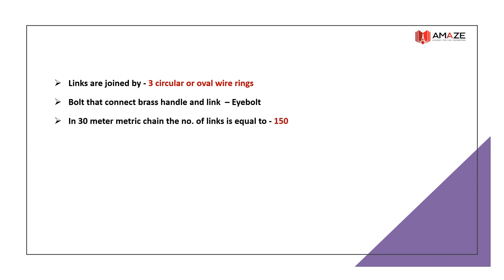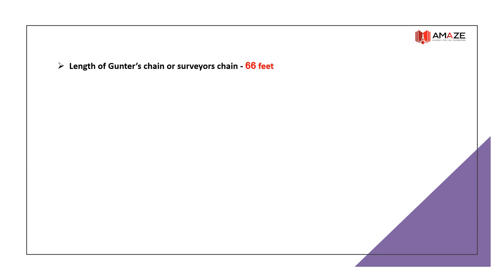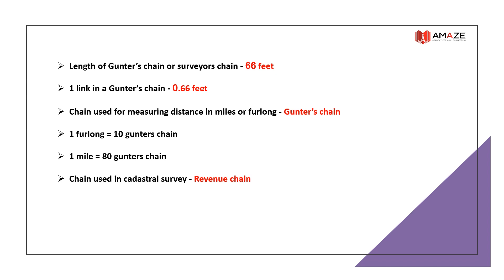A 30-meter metric chain has 150 links and a 20-meter metric chain has 100 links; one link = 20 cm. A non-metric chain 100 feet long containing 100 links is an engineer's chain, with brass rings at every 10th link. Length of Gunter's chain (surveyor's chain) is 66 feet; one link = 0.66 feet. Gunter's chain is used for measuring distances in miles or furlongs: 1 furlong = 10 Gunter's chains, 1 mile = 80 Gunter's chains. The chain used in cadastral survey is revenue chain — a non-metric chain 33 feet long consisting of 16 links.